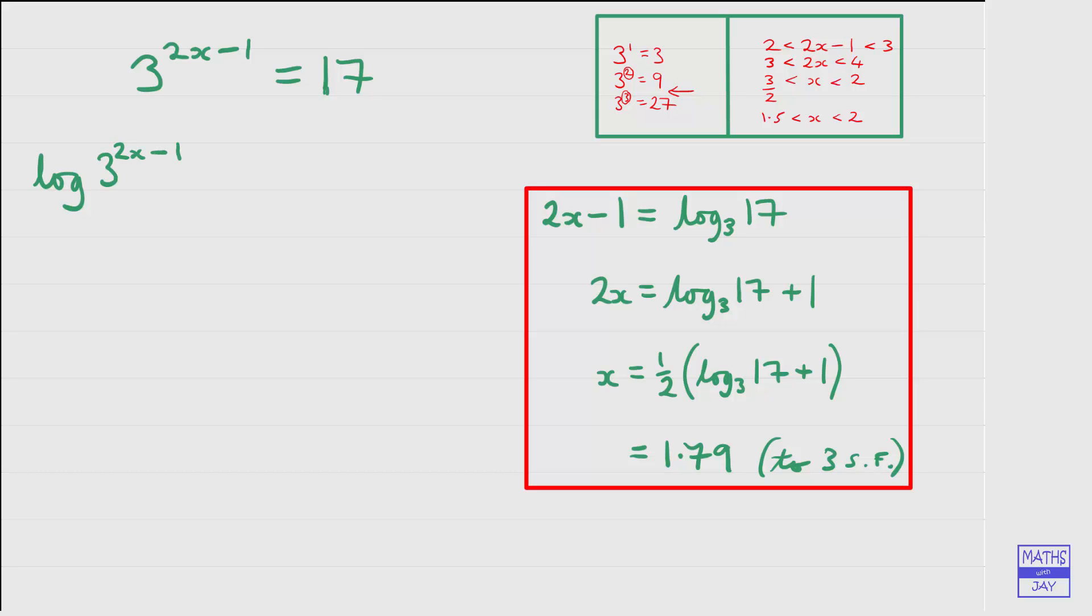So when we're taking logs to base 10, we don't need to write down the base. So when I just write down log, then you would understand that that means log to base 10. So taking logs to base 10 of both sides, we get the log of 3 to the power of 2x minus 1 is the same as log of 17. And then using one of the laws of logs, we can bring down the power, so the 2x minus 1 multiplying log of 3 is equal to log 17.